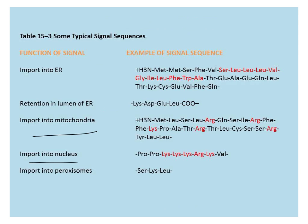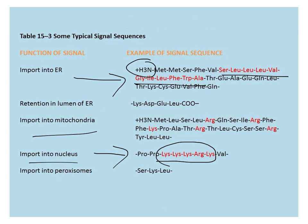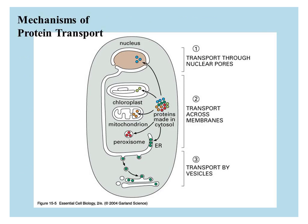Example signal sequences include an ER import signal near the N-terminus of the polypeptide chain. For import into the nucleus, a protein needs what's called an NLS, a nuclear localization signal, which is a series of five positively charged amino acids that serves as a signal sequence for nuclear import. Proteins need to go to their proper location once synthesized, and there are different mechanisms for protein import that we will discuss.